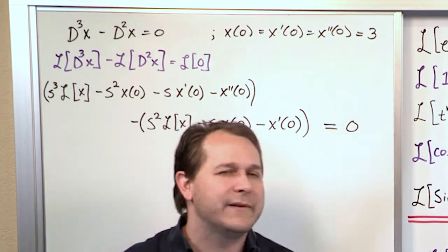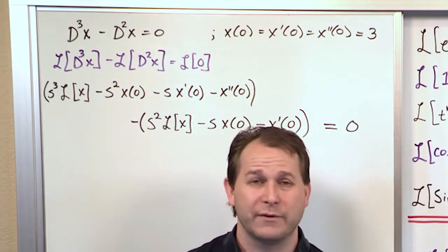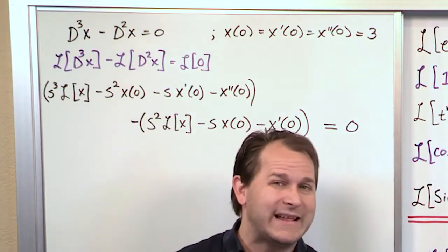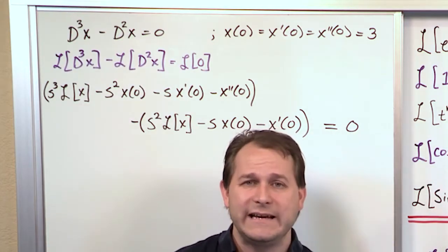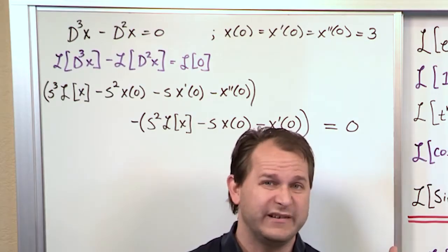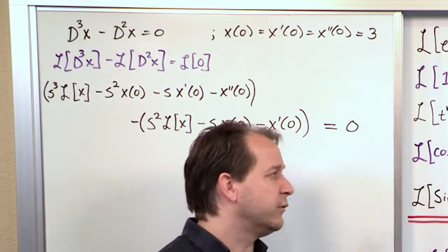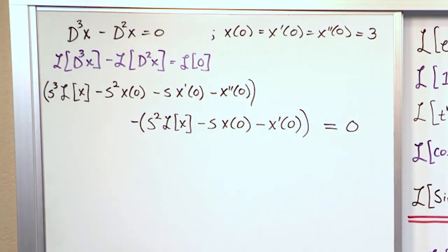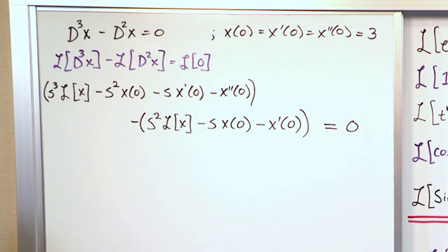You should know that the Laplace Transform of 0 is 0, because when you think back to that integral of e^(-st) times the function — in this case the function is 0 — so we're integrating 0 from 0 up to infinity, and of course we get 0. So when you're Laplace transforming a 0, you get a 0.